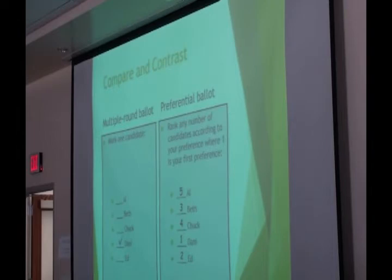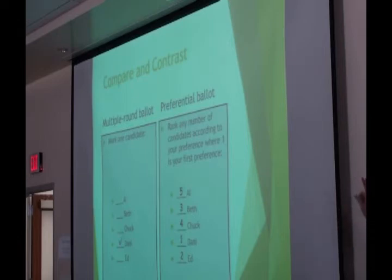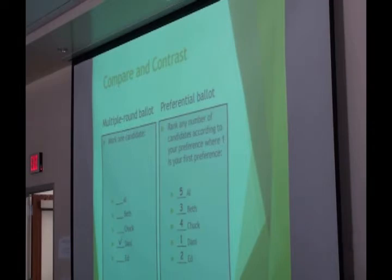On a preferential ballot, if Danny is the candidate who gets eliminated because Danny receives the fewest number of votes, you go to the next highest preference on the ballot, which is number two, Ed — as if that voter had already cast his second round ballot for Ed. That's one of the great things about multiple-round voting. Knowing multiple-round voting is the key to understanding preferential voting.